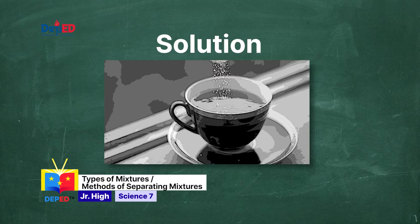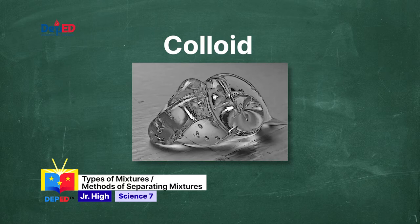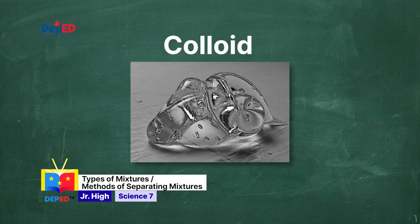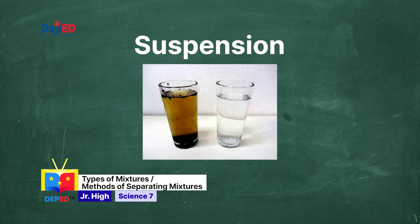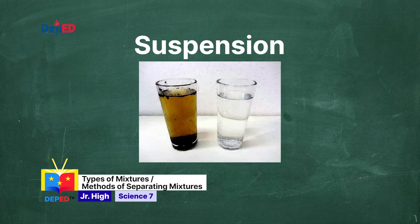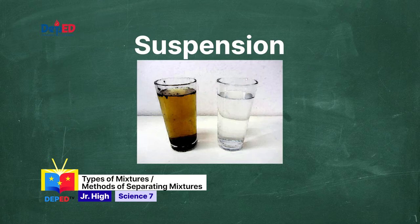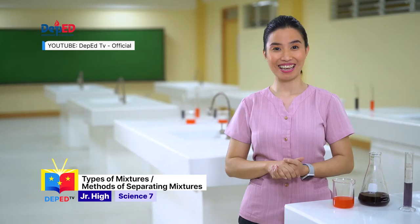Second is a colloid — for example, hair gel. A colloid is a homogeneous mixture with medium-sized particles. The particles are not large enough to settle or be filtered out of the mixture. Particles are dispersed throughout. Third is a suspension — for example, mud and water. A suspension is a heterogeneous mixture with large particles that are large enough to be seen and can settle or be filtered out. If the glass is undisturbed for very long, the mixture will separate into its component parts.